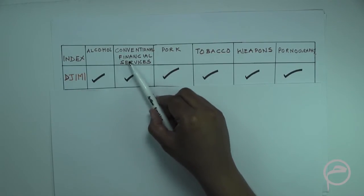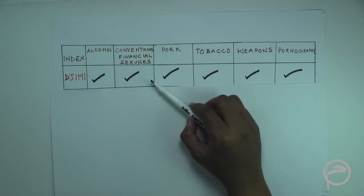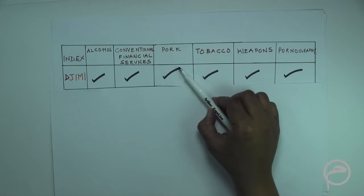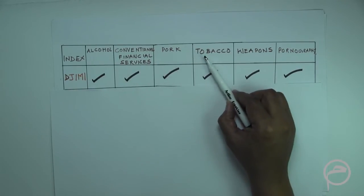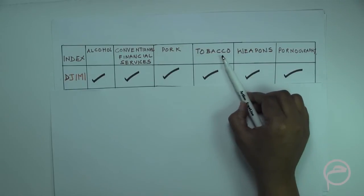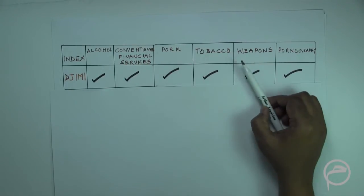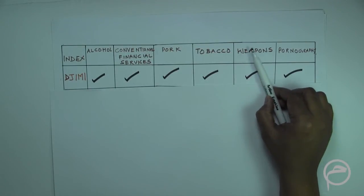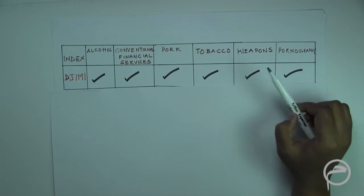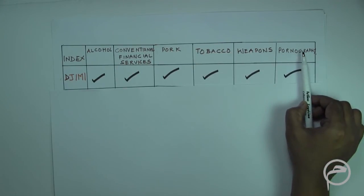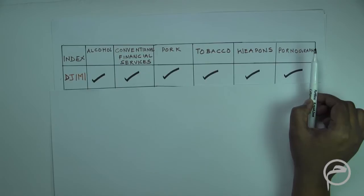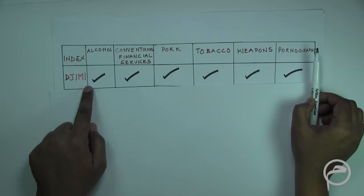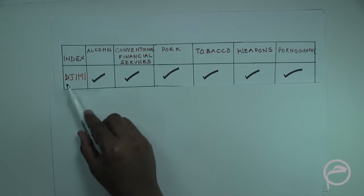Companies involved in conventional financial services are not allowed. Companies involved in the production and distribution of pork are not allowed. Companies involved in the production of tobacco are not to be invested in. Companies involved in the manufacturing of weapons are not allowed. Companies involved in the production and distribution of pornography material are also used as a screening parameter for the Dow Jones Islamic Market Index.